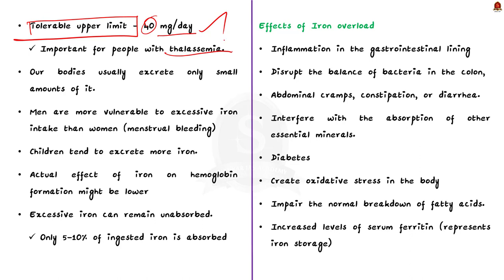This limit is especially important for people who already have too much iron in their body, like patients with thalassemia — a condition that causes iron overload in the body. When we absorb iron, our bodies usually excrete only a small amount of it. Only in some instances, like menstrual bleeding in women, do we excrete iron in large quantities. This means that women have a natural way of getting rid of excess iron, but men do not. Therefore, men are more vulnerable to excess iron intake. Recent studies have shown that when fortified foods are consumed, children tend to excrete more iron, though we are not entirely sure how this extra excretion happens — it is likely through the intestine or urine.